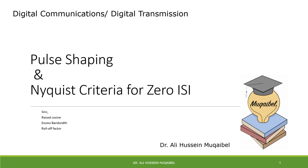Let's introduce the concept of pulse shaping and Nyquist criteria for zero ISI — zero inter-symbol interference. We will look at the sinc, the raised cosine, the concept of excess bandwidth, and the roll-off factor. Those are the four terminologies you'll get used to: sinc, raised cosine, excess bandwidth, and roll-off factor.